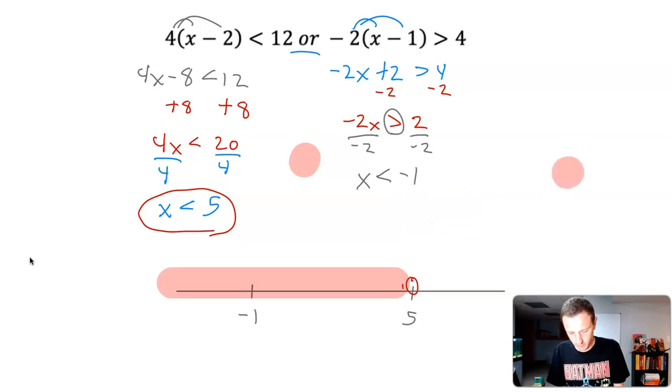And then x is less than negative 1. X is less than negative 1. So we want all the values that are less than negative 1. So I'm going to highlight out to the left for all the values less than negative 1. And I'm going to draw an open circle there. So it's strictly less than negative 1.